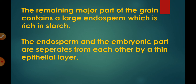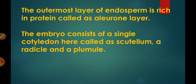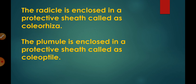The endosperm and embryo are separated by an epithelial layer. The outermost layer of endosperm, which is protein-rich, is called the aleurone layer. In the embryo, there is a single cotyledon which is a thin membranous scutellum, a radicle, and a plumule. The protective sheath of the radicle is the coleorhiza and the protective sheath of the plumule is the coleoptile. That is all about the structure of a maize grain.